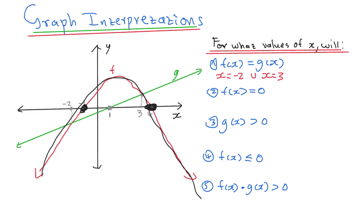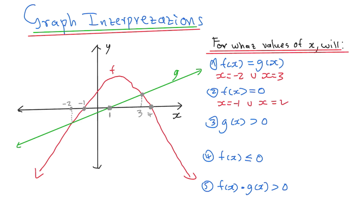The graph of f cuts at negative 1 and 4, at exactly those points. So my answer is: y is 0 where x is equal to negative 1, union, x is equal to positive 4. And then I'm done.